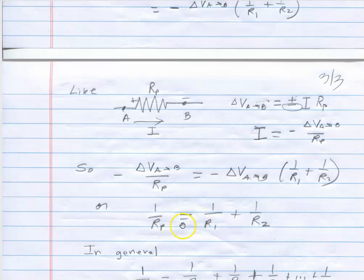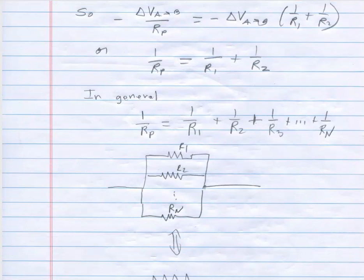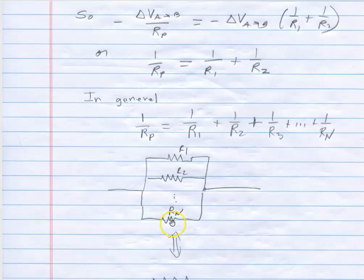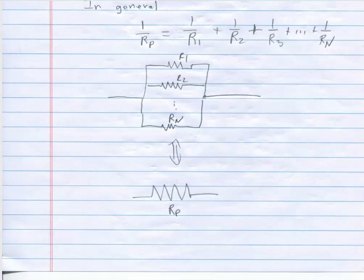And one can do this, extend this in general. So if I have N resistors in parallel, then I can replace all of those by a single resistor R P. It would have exactly the same effects in the circuits. The current entering and the current leaving would be exactly the same. The voltage drop across it would be exactly the same. And so I could replace all of these resistors by a single resistor. Provided I choose the R P to be, the reciprocal of R P to be the sum of the reciprocals for resistors in parallel.